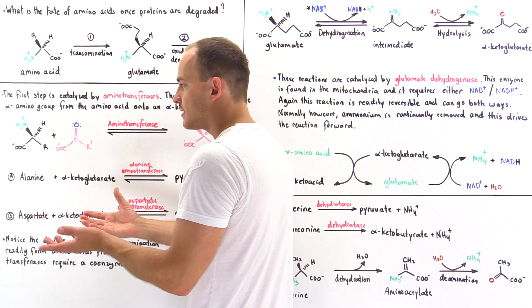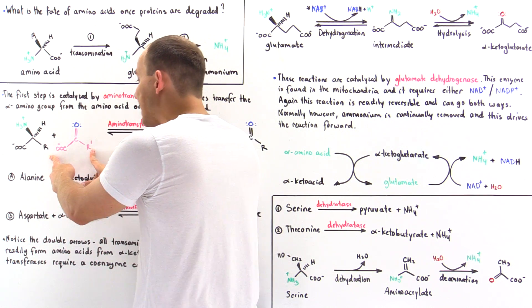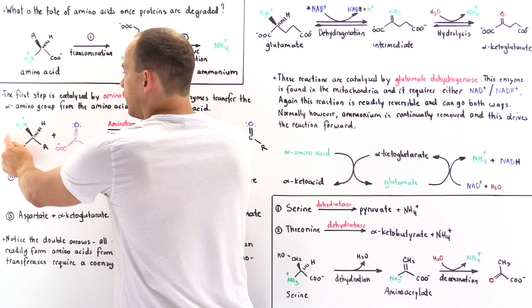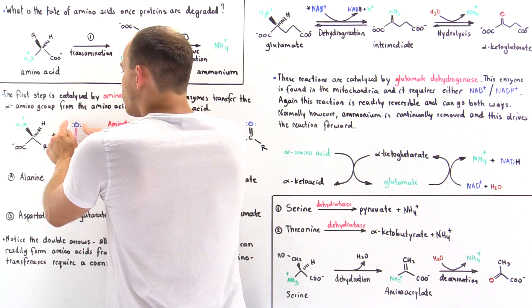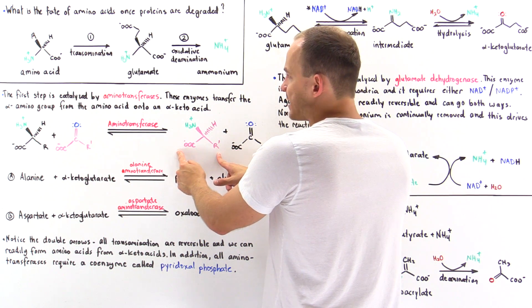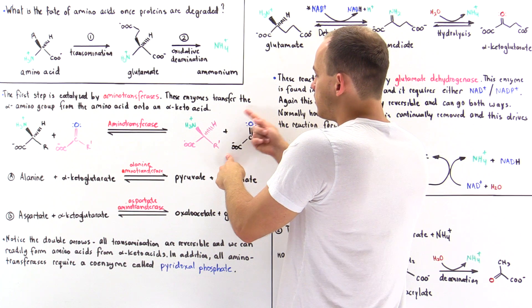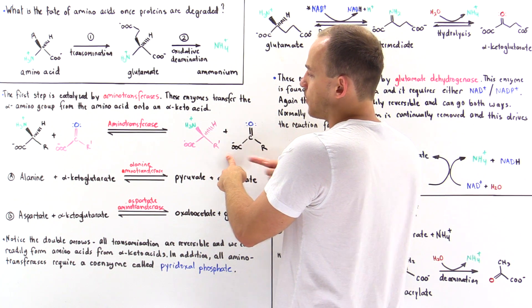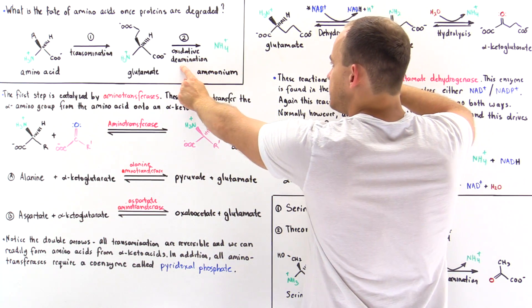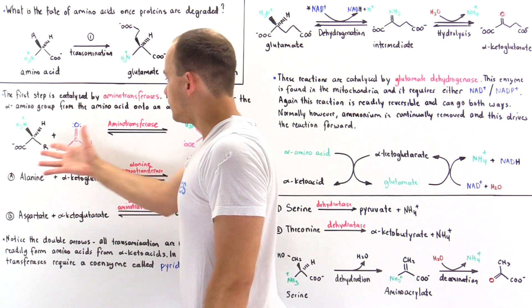In the general transamination process, we begin with some target amino acid that we have too much of and want to break down. We react it with an alpha-keto acid, and we transfer the alpha amino group onto that alpha-keto acid, removing the oxygen, to form two products: a new amino acid — specifically glutamate — and an alpha-keto acid. The alpha-keto acid can be used for energy purposes, while the glutamate must further undergo the deamination step to generate free ammonium.